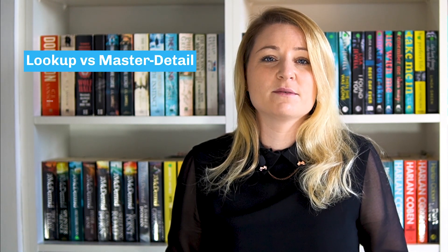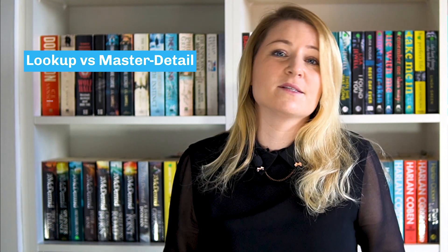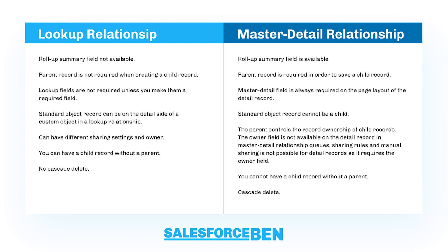Let's recap. Roll-up summary fields are only available on master detail relationships. The parent record is always required in a master detail relationship, but lookup fields are optional. In a master detail relationship, a standard object cannot be on the detail side. In a lookup relationship, records can have different sharing settings and owners. However, in a master detail relationship, the child record is controlled by the parent and cannot have its own owner. In a lookup, both records can exist independently, and you can have a child record without a parent. But in a master detail relationship, you cannot have a child record without a parent, and when you delete the parent record, all child records will also be deleted.